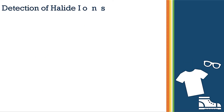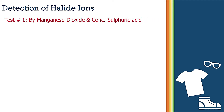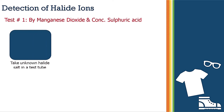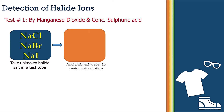If you have to identify halide ions in any inorganic salt, you can perform two different tests. Test one is done using manganese dioxide and sulfuric acid. You take an unknown salt — you don't know which halogen is present; it could be chloride, bromide, or iodide. Note that fluoride ion cannot give any result in this test.